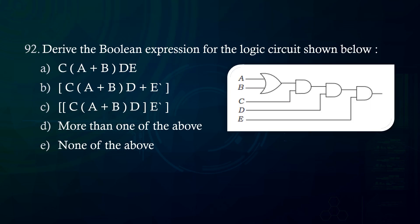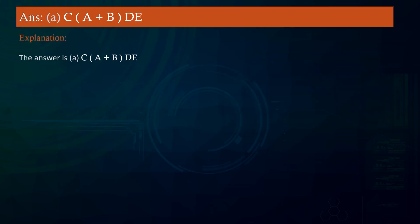Derive the Boolean expression for the logic circuit shown below. Answer: C (A + B) D. Boolean algebra can be used: A. for designing digital computers, B. in building logic symbols, C. in circuit theory, D. More than one of the above. E. None of the above. Answer: More than one of the above.